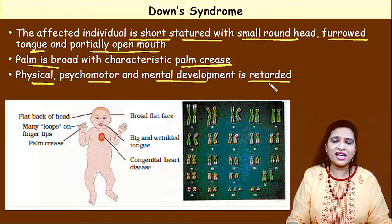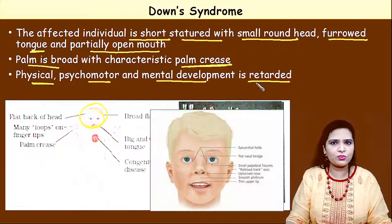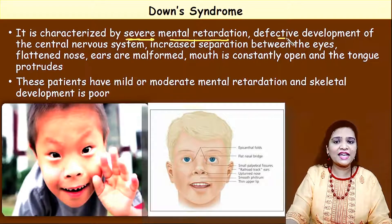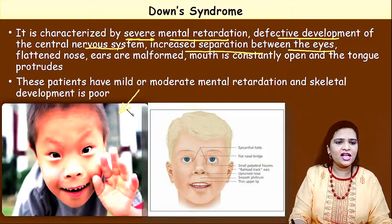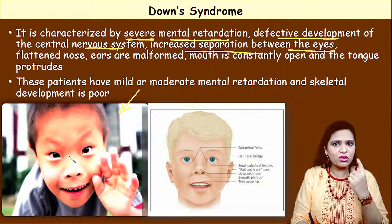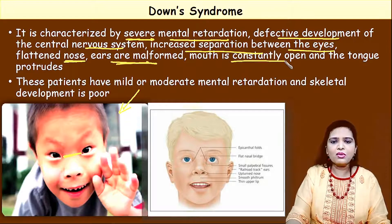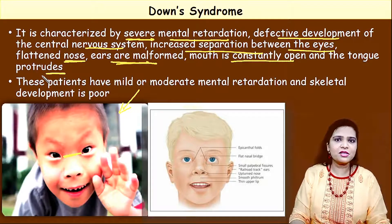The baby will not be normal like other children — their physical and psychomotor capacity, meaning thinking speed and speed of doing things, will be retarded and slow. Down syndrome is characterized by severe mental retardation, defective development of the central nervous system, increased separation between the eyes, flattened nose, malformed ears, and a mouth that is constantly open with the tongue protruding.